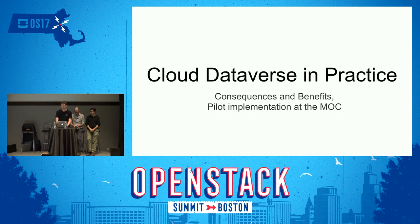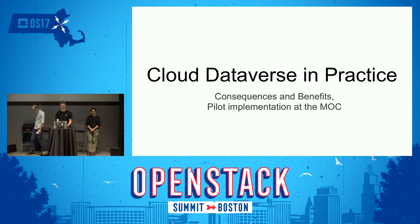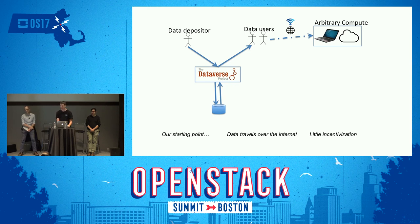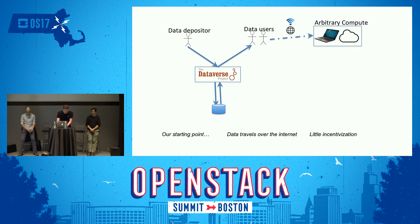Now I'm going to talk about Cloud Dataverse in practice — the consequences and benefits of the changes we've made, referencing the pilot implementation at the Mass Open Cloud. The architecture we inherited is not particularly helpful to users who want to analyze data in Dataverse using compute. Whenever you see blue arrows, that represents dataset transfer. With the existing architecture, datasets have to travel over the internet before you can analyze them using compute — which is not very convenient and there's definitely not much incentivization for analysis.